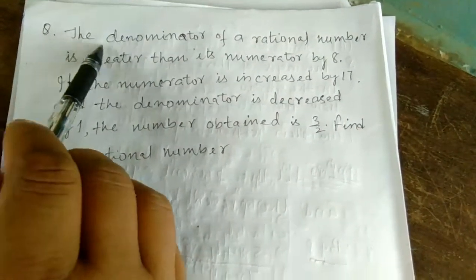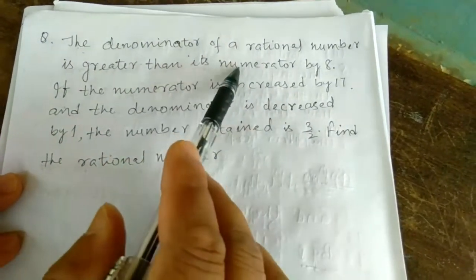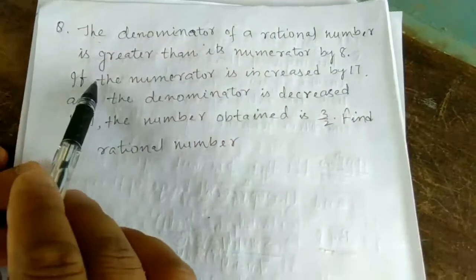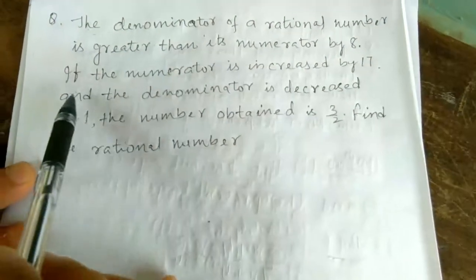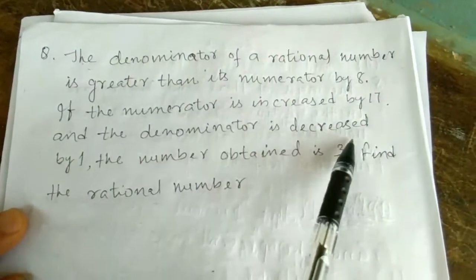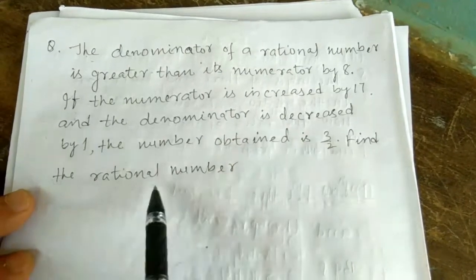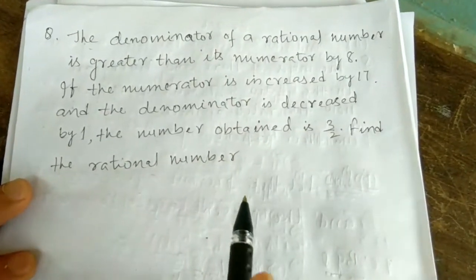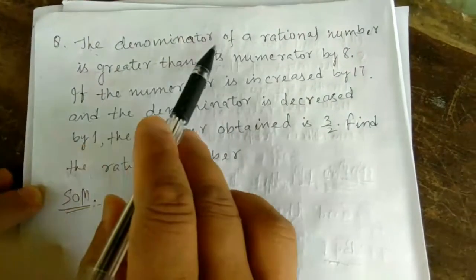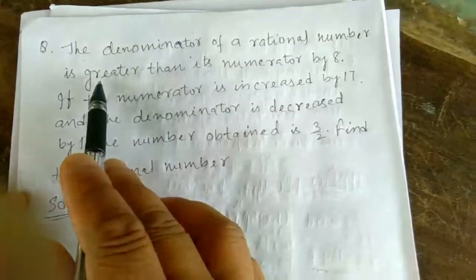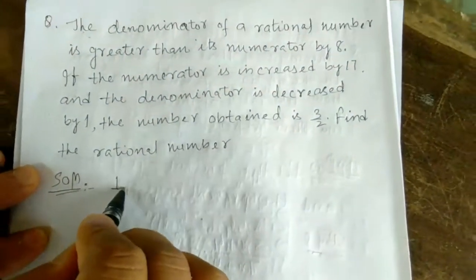Next question: the denominator of a rational number is greater than its numerator by 8. If the numerator is increased by 17 and the denominator is decreased by 1, the number obtained is 3 by 2. Find the rational number. We don't know the numerator and denominator.